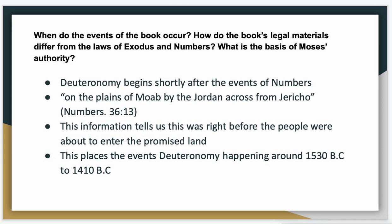Moses led them into Moab. They were looking at it, watching it, seeing it. We all know that Moses is unable to go into the Promised Land, so he stops his people and decides to give these three speeches before they enter the Promised Land, before he sets them free into this land. This would be placed in the events of Deuteronomy, happening around 1530 BC to 1410 BC.